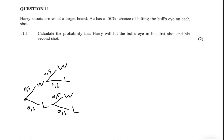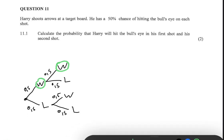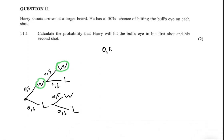Here we're looking for the probability that he will hit the bull's eye in his first and second shot. So the first shot needs to be a win, and also the second shot needs to be a win. So we're going along the branches, so we're going to have 0.5 multiplied by 0.5, which equals 0.25.